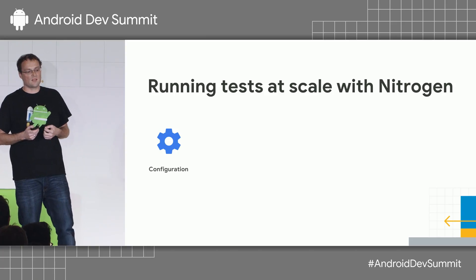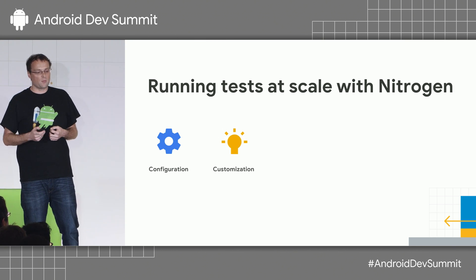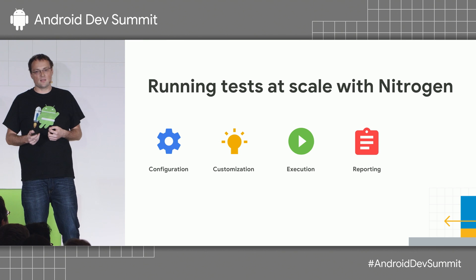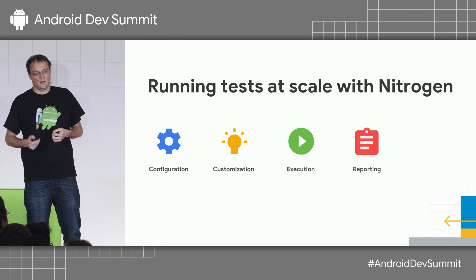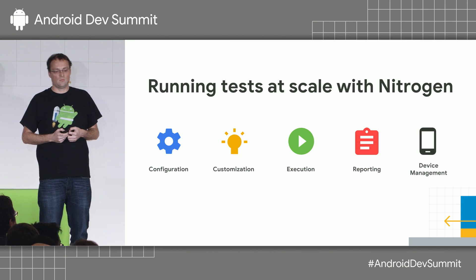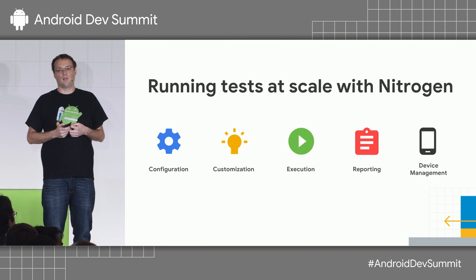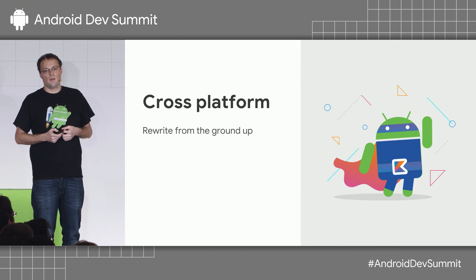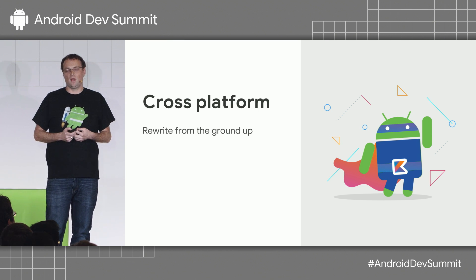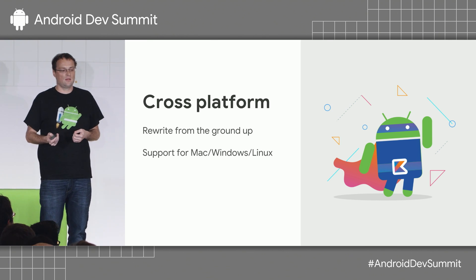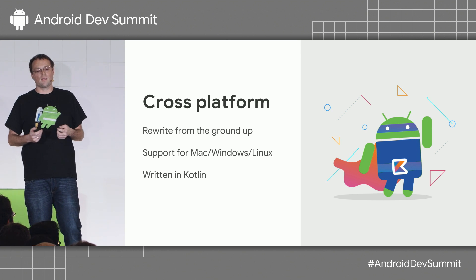Nitrogen allows you to run tests at scale. It is highly configurable — built with customization and extensibility in mind. You can execute unit and instrumentation tests. It vastly improves reporting and therefore debugging. And maybe one of the most exciting things is it ships with its own virtual device management solution that manages devices for you — something a lot of people in the community have been asking for. Nitrogen is cross-platform, built from the ground up with seven years of experience in host-side and device-side infrastructure. It will support Mac, Windows, and Linux and is written in Kotlin.